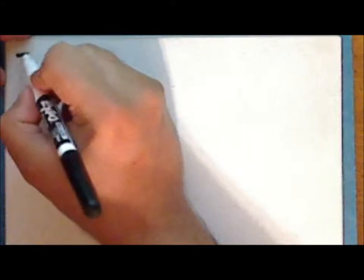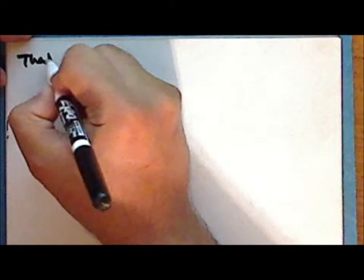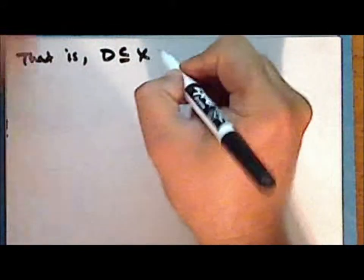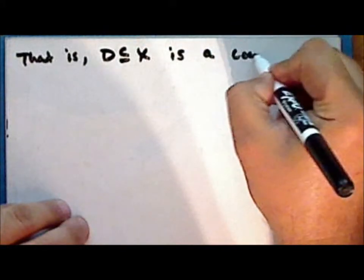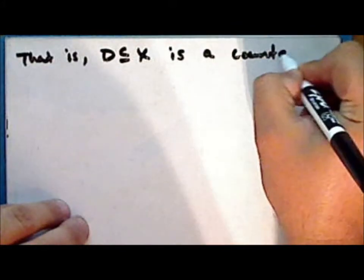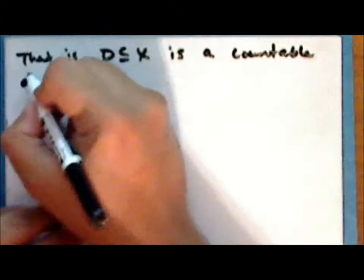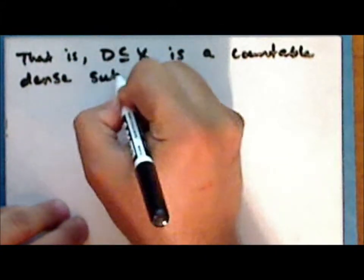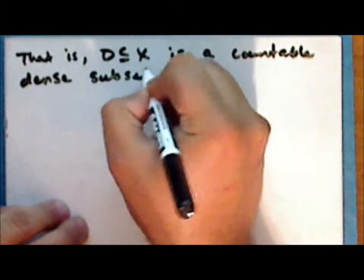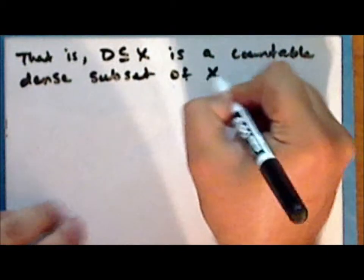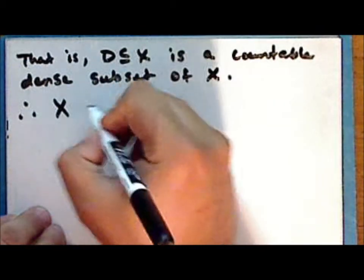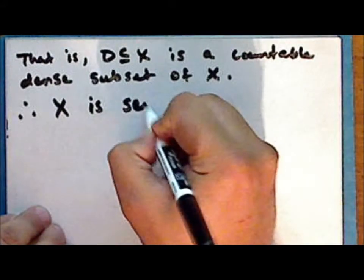That is, the subset D of the space X is a countable dense subset of the space X. And therefore, the space X is separable.